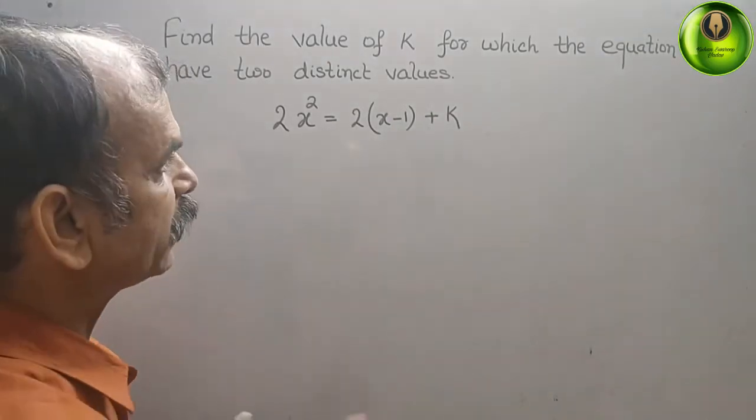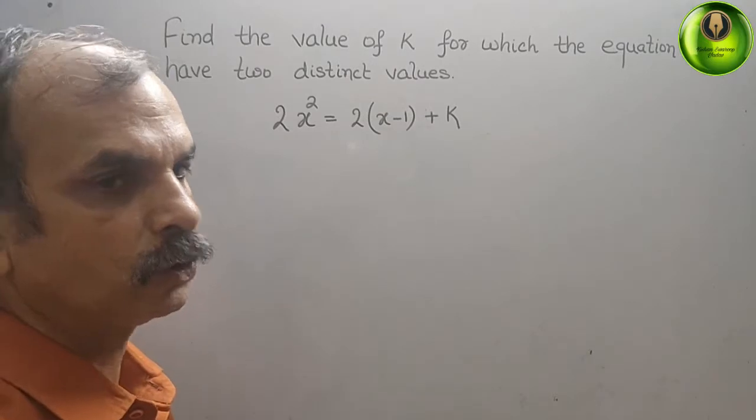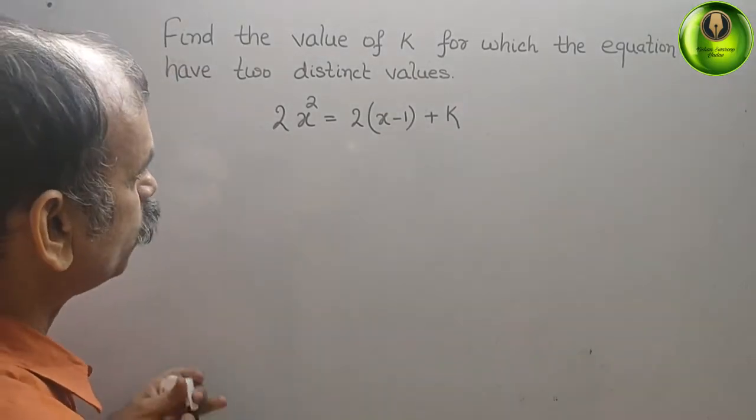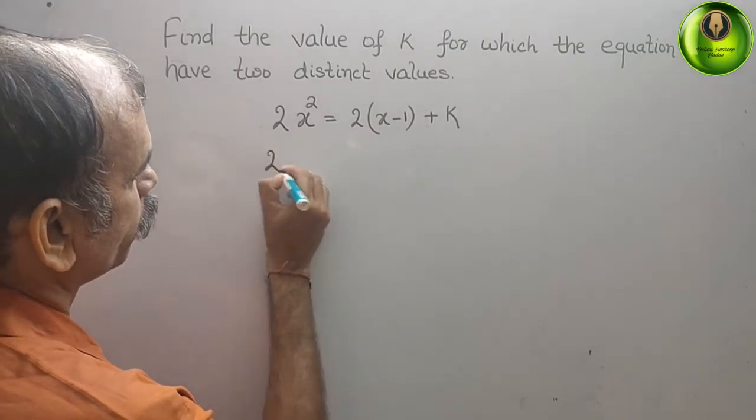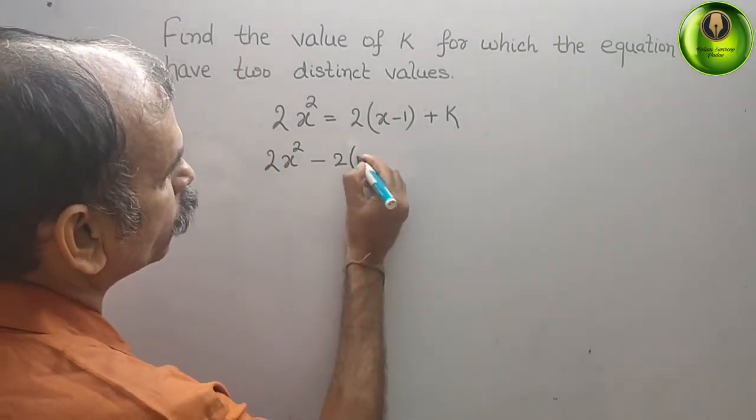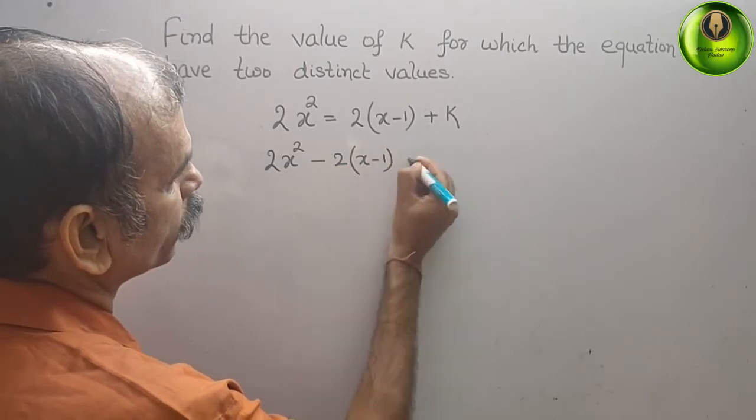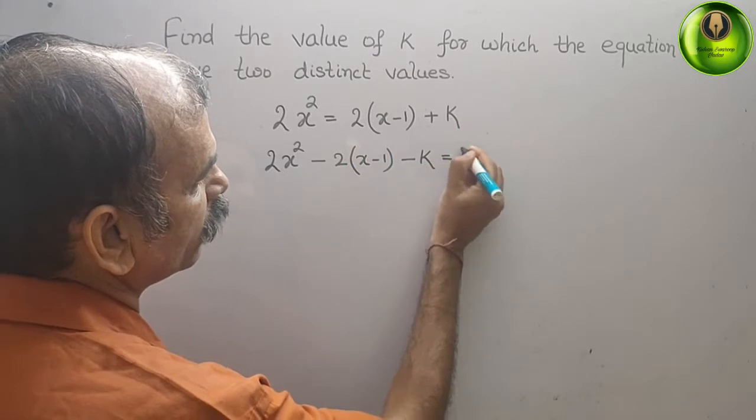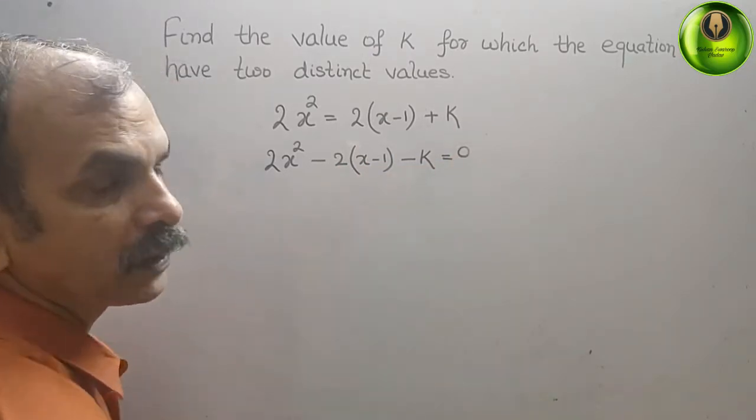What you will get: 2x² minus 2(x-1) and this will also become minus k, that is equal to 0. Now solve this, open the brackets.